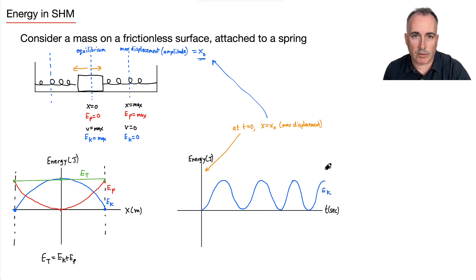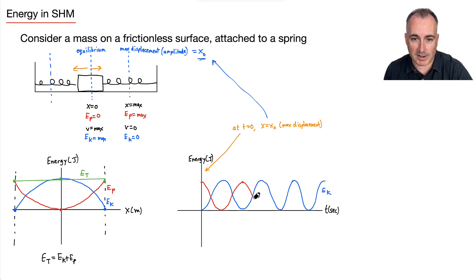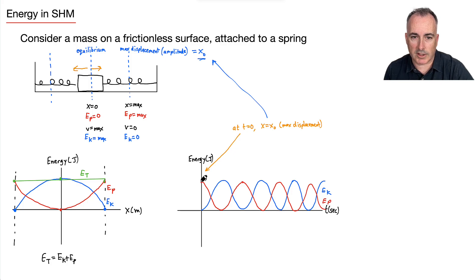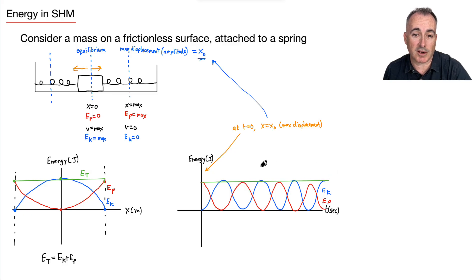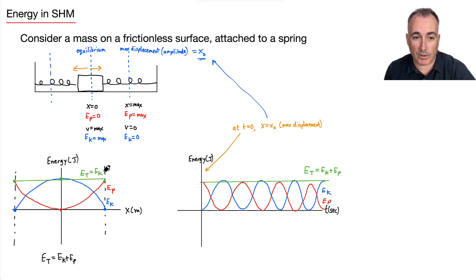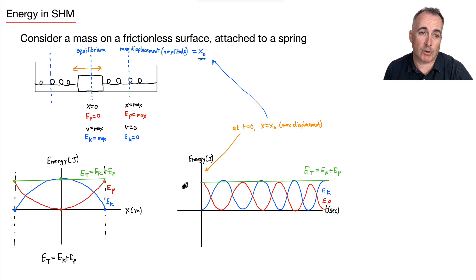The potential energy over time is the opposite — at t = 0 it starts at a maximum and then follows the inverse curve. Just like before, the total energy ET is a flat horizontal green line that touches all the peaks of both curves, since ET = EK + EP. The key questions to ask are: are we looking at energy with respect to displacement, or energy with respect to time? If you understand this, you're all set for simple harmonic motion.